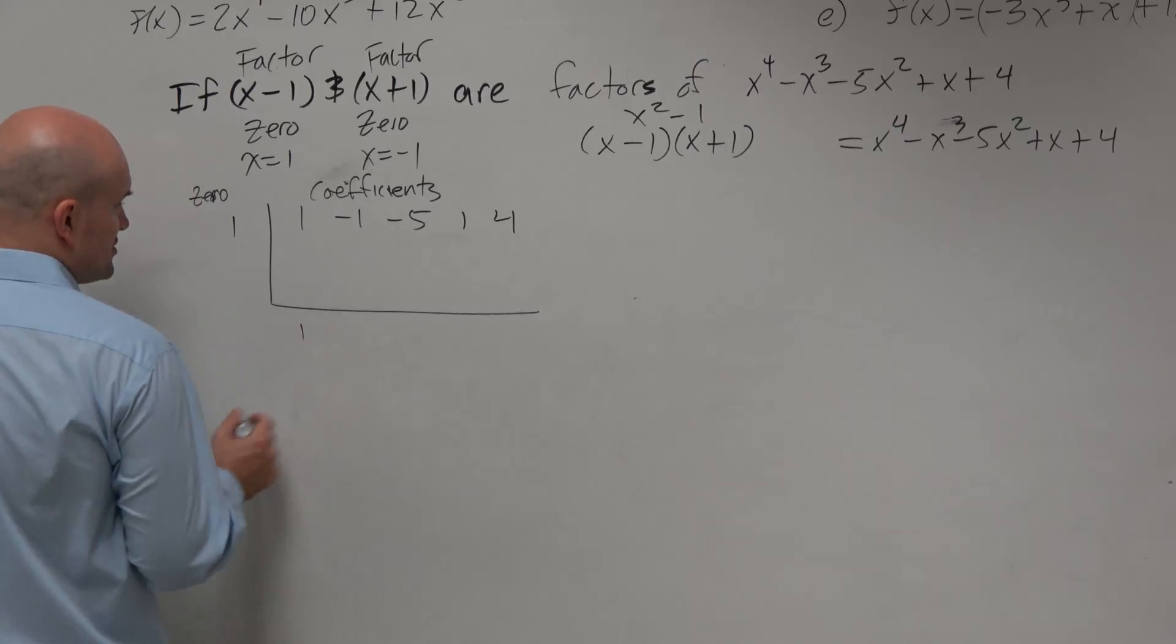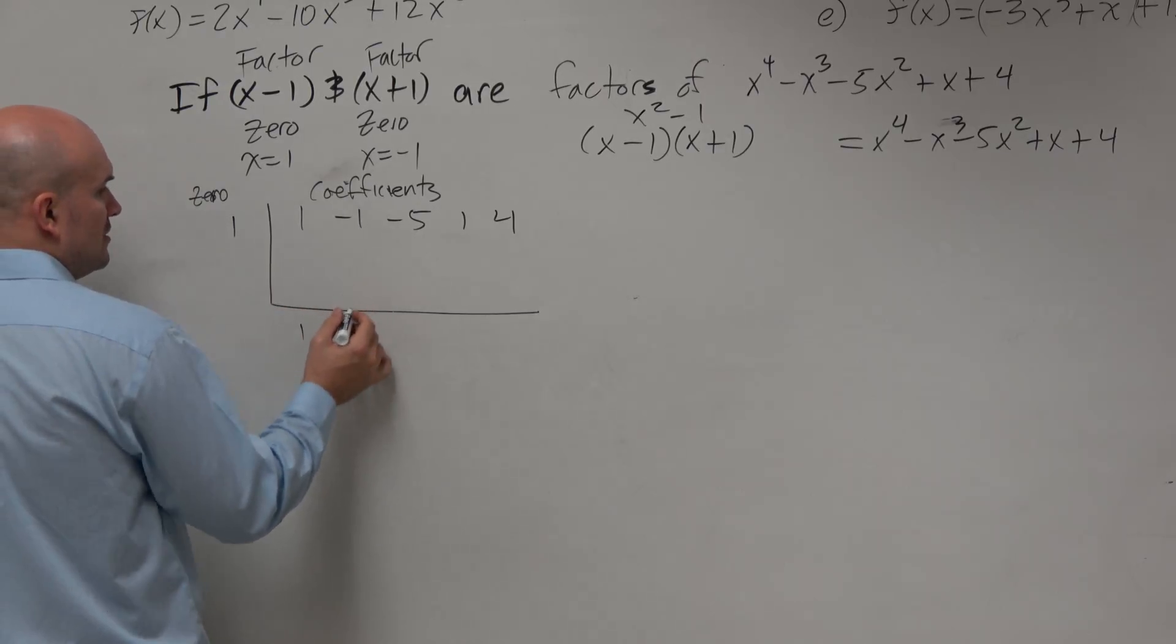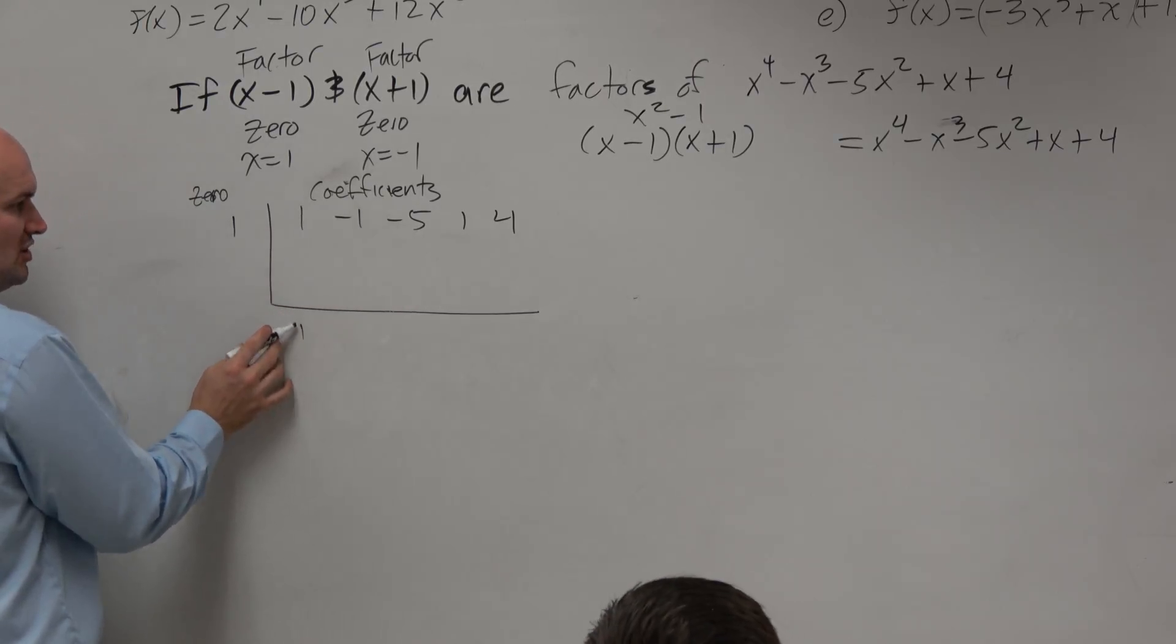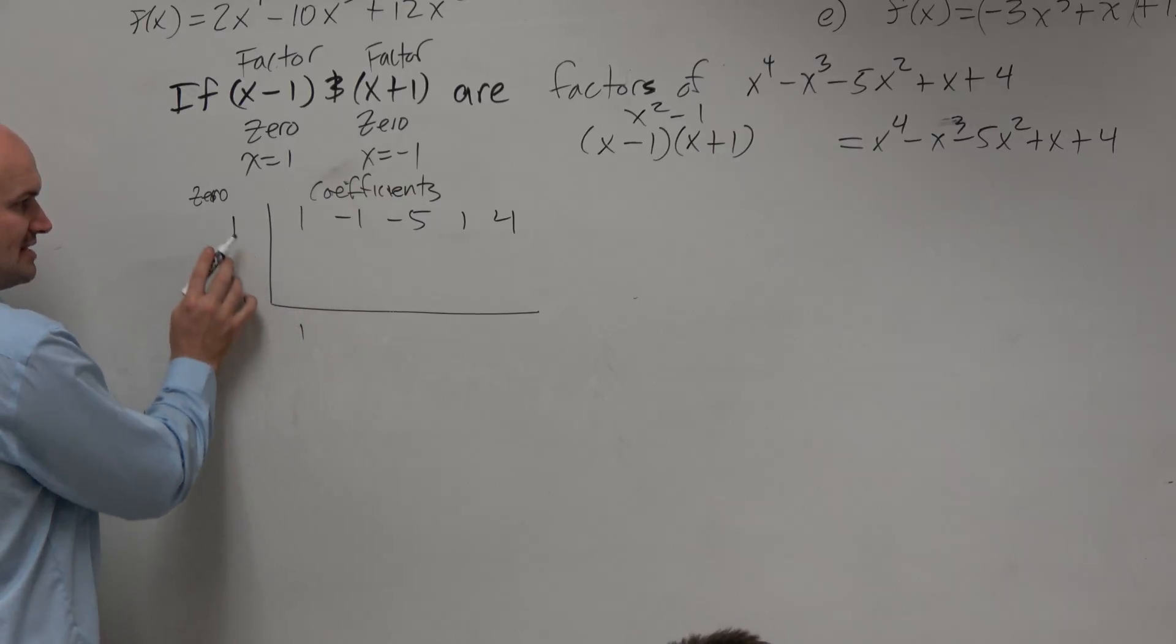So again, guys, first term you bring down, which is a 1. 1 times 1 is, so bring down the 1, multiply on the diagonals, add on the vertical. 1 times 1 is 1.